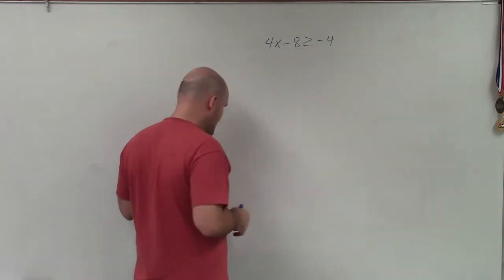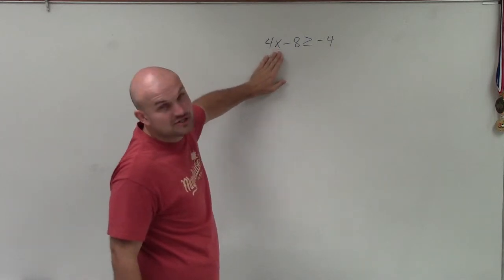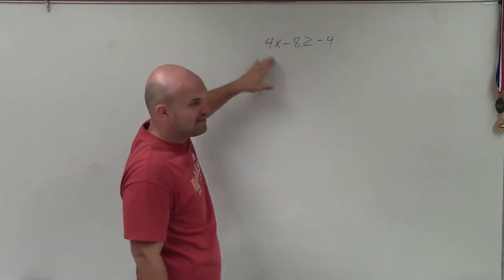We're going to use our inverse operations. You can see we want to isolate the x. So we look at what operations are happening to our x. We can see it's being subtracted by 8 and multiplying by 4.